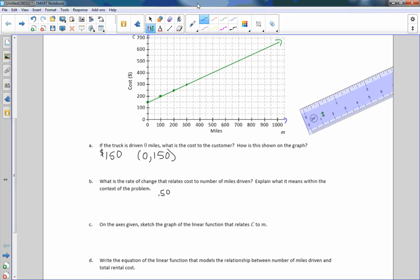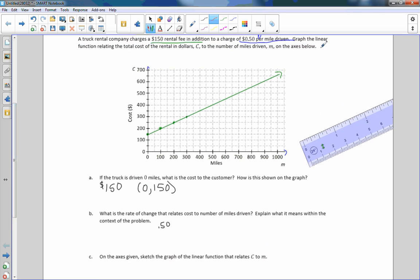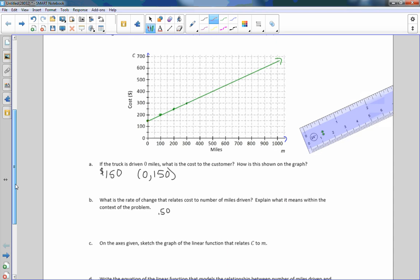Part C: On the axis given, sketch the graph of the linear function that relates C to M. I've already done that because it kind of told us to do this up here. It says graph the linear function relating total cost of the rental dollars C to the numbers M on the axis below. So obviously we've already done it. You start at (0, 150), and for every 100 miles you're increasing $50. It's graphed.